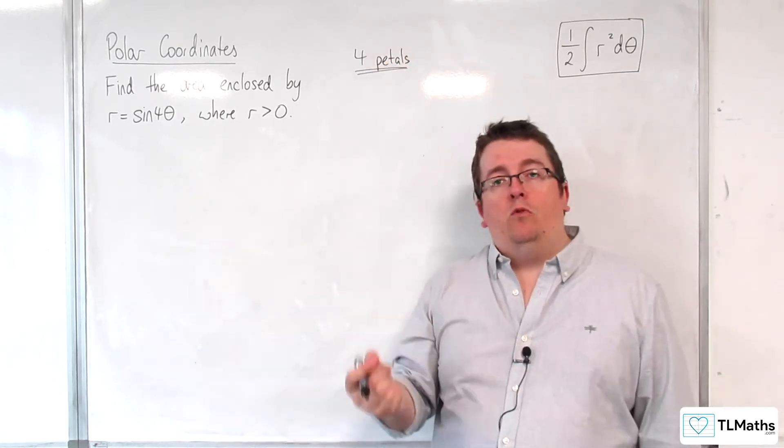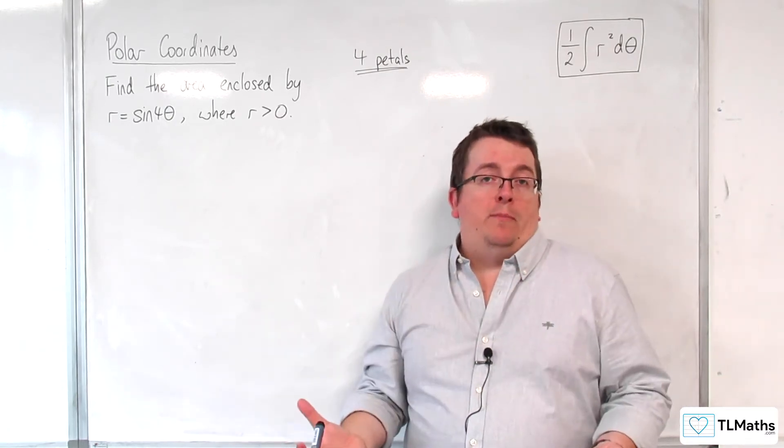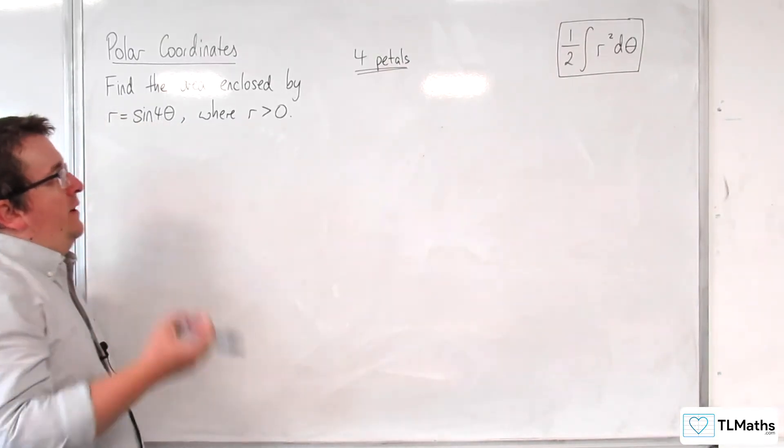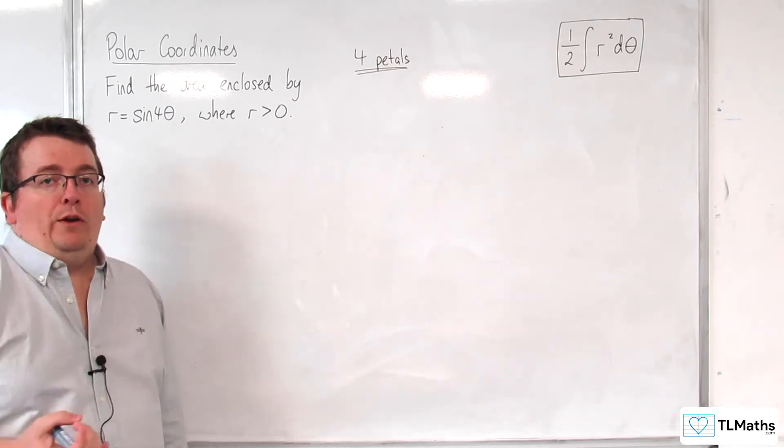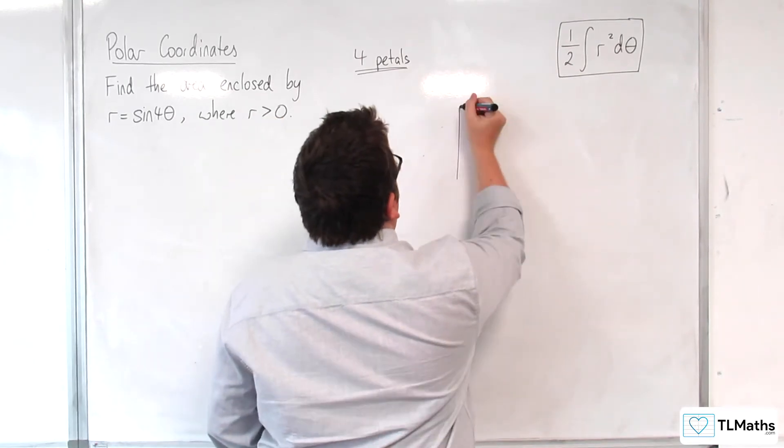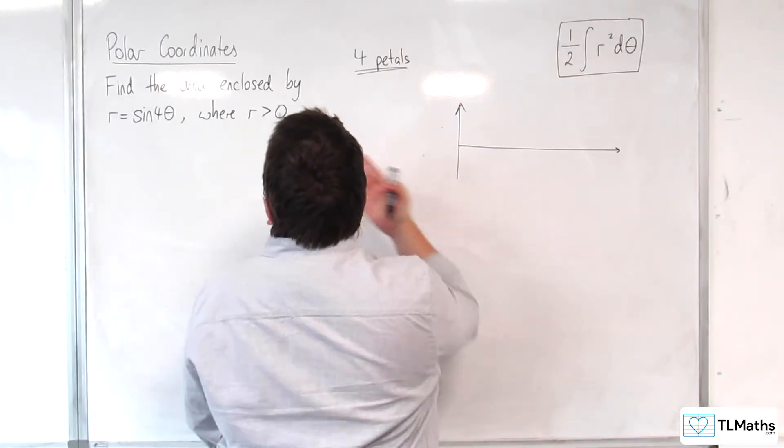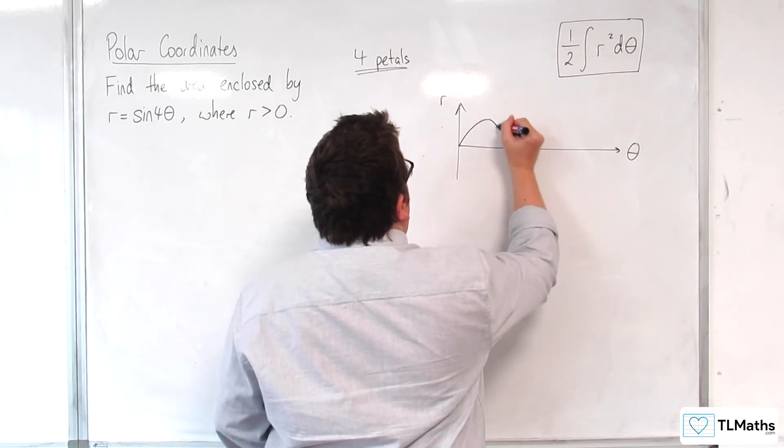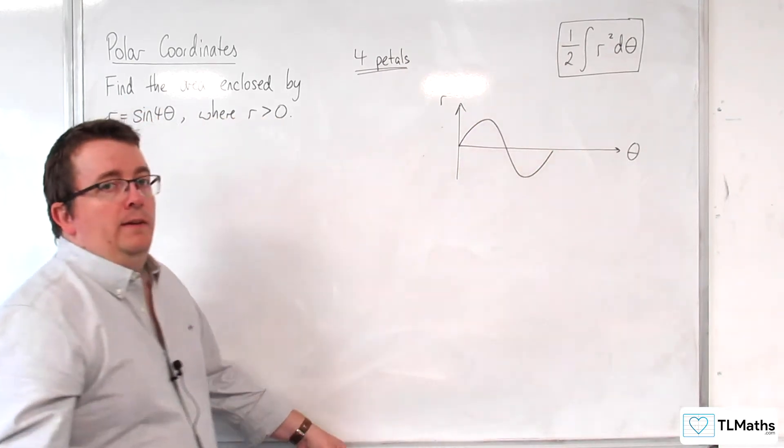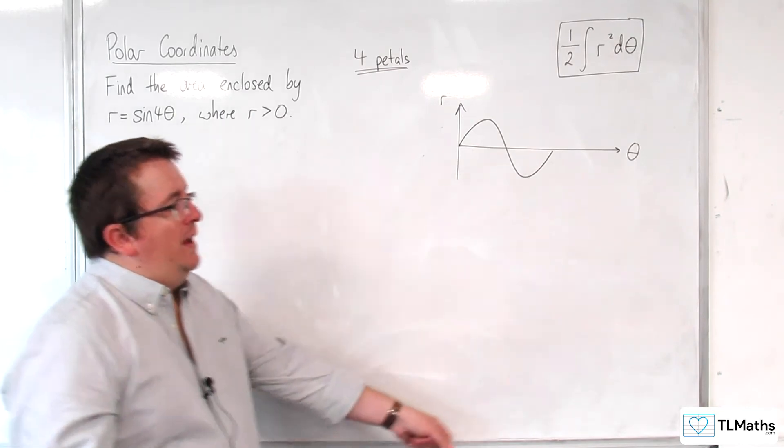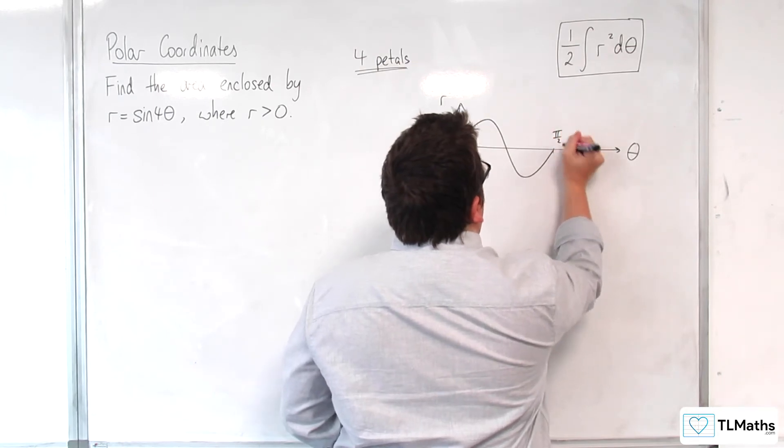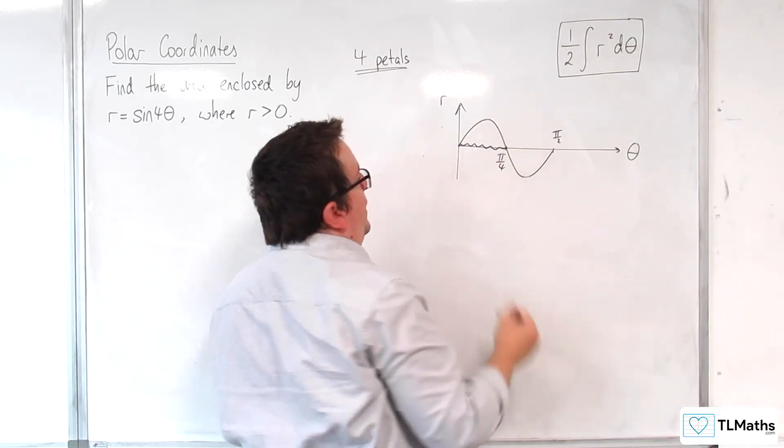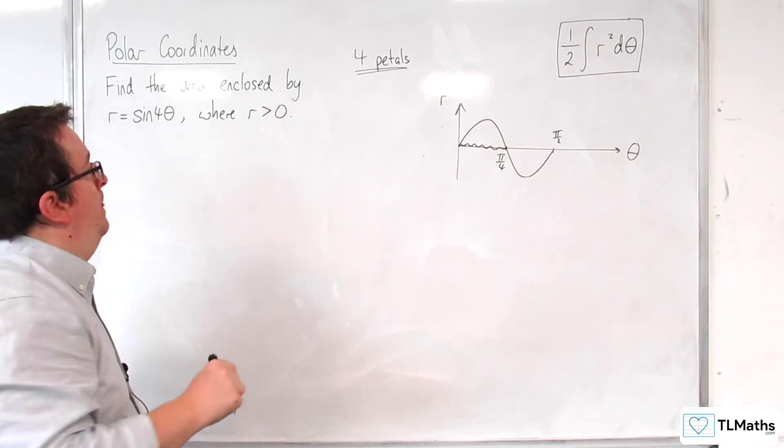So, the idea here will be, if I can work out the area of one of those petals, I can multiply it by 4 to get the total area required, because of the symmetry. So, the next thing is, I need to know what to integrate between to get one of the petals. If I'm going to do a quick sketch of sine of 4 theta, where theta is on the horizontal axis and r is on the vertical axis, then this is going to be a quarter of it between 0 and 2 pi. So r is positive here between 0 and pi over 4. That will be my first petal.